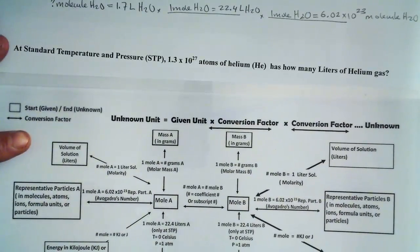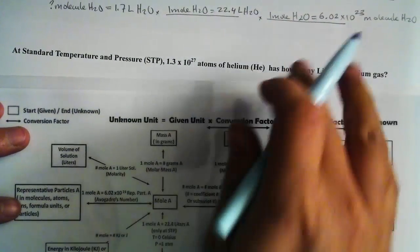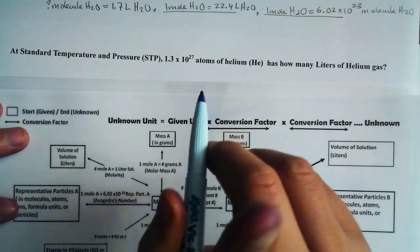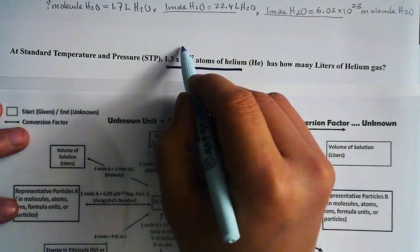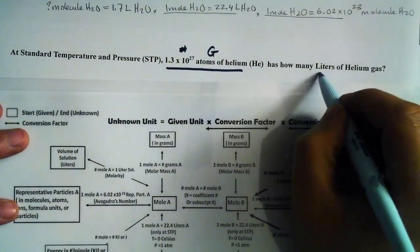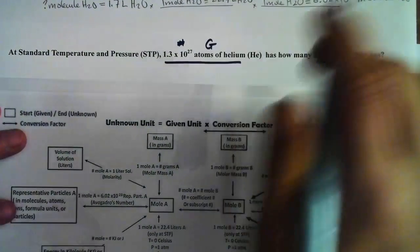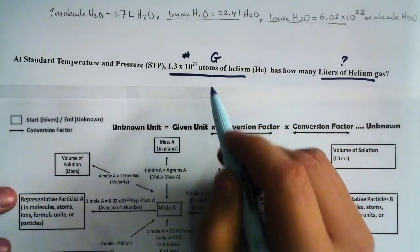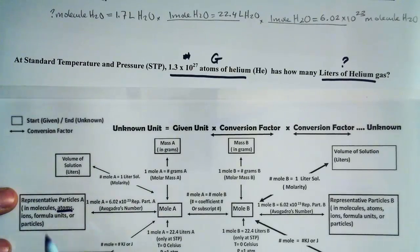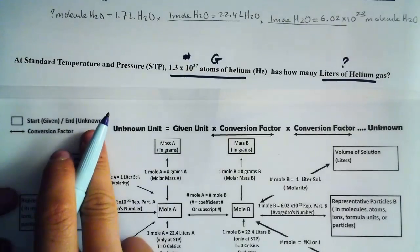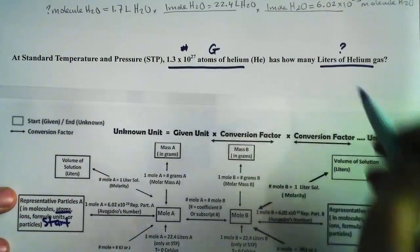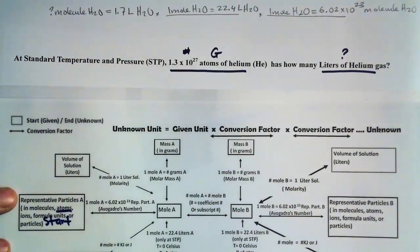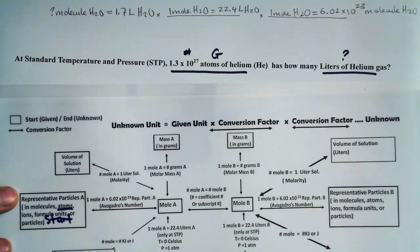At standard temperature and pressure, 1.37 × 10²⁷ atoms of helium has how many liters of helium gas? We are given the number of atoms — that's our given. We are looking for liters of helium gas — that's our unknown. We start from atoms on the flowchart, which is part of representative particles, right there. We end at liters. We can use this conversion factor because it is at STP.